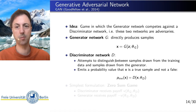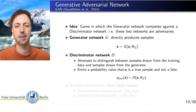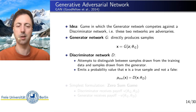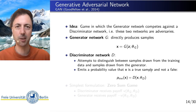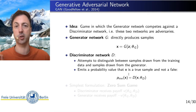Then we have a discriminator network D, a second neural network, and this discriminator network is a simple classifier. It takes as input a sample X, and has only one output — a single output neuron — which assigns a value between 0 and 1, a probability value, that X is a true sample from the original dataset and therefore a true representative of the underlying probability distribution, and not a fake — where fake means generated by the generator. So the discriminator tries to tell whether the sample was from the original database or generated by the generator.